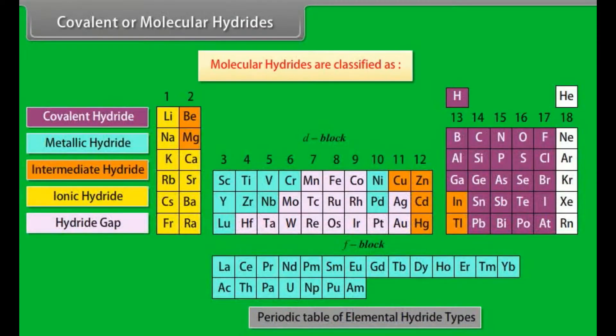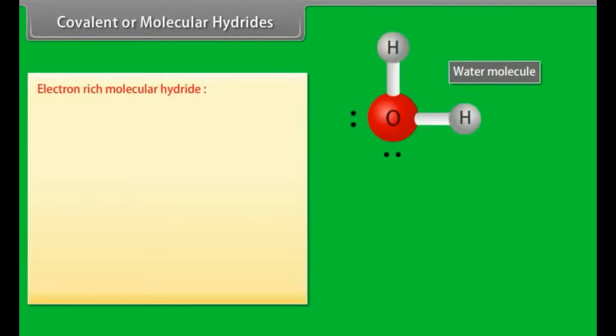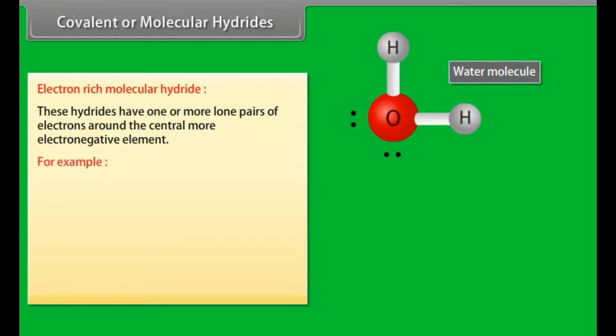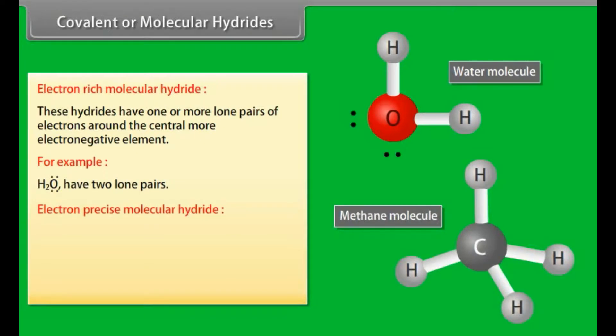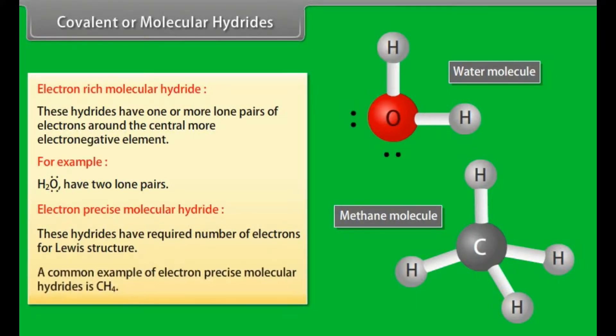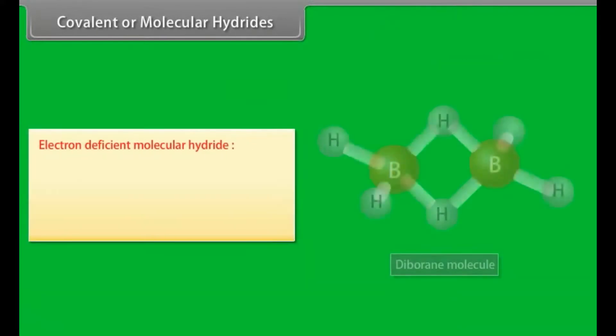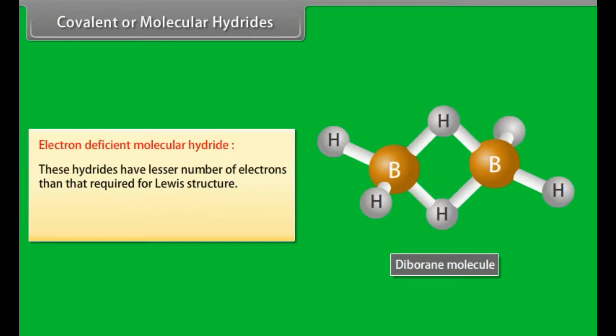Covalent or molecular hydrides. Molecular hydrides are classified as: Electron-rich molecular hydride. These hydrides have one or more lone pairs of electrons around the central more electronegative element. For example, water has two lone pairs. Electron-precise molecular hydride. These hydrides have required number of electrons for Lewis structure. A common example of electron-precise molecular hydride is methane. Electron-deficient molecular hydride. These hydrides have lesser number of electrons than that required for Lewis structure. A common example of such molecular hydride is diborane.